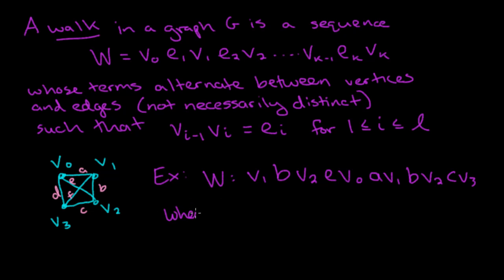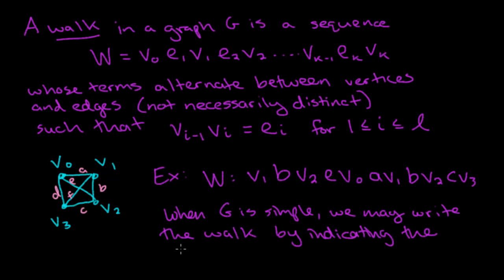And in fact, when the graph is simple, when G is simple, we may write the walk by indicating the vertices only. And that makes sense, because if you look at this walk, if I just told you V1, then V2, you know you had to have traversed via the edge B, because there are no multiple or parallel edges in a simple graph.